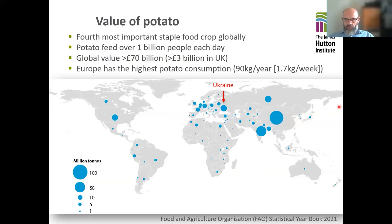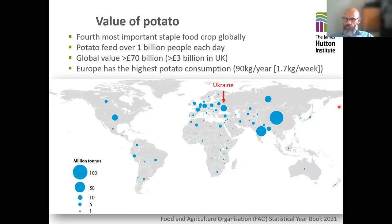This map shows us several things. First of all, it shows us that potato can be grown around many parts of the world. This is important because it can grow in different climatic zones, which is essential for food security, and a lot of other major crops can't do that. What might surprise people is that China and India are the two biggest producers of potato — they produce about half of all potatoes worldwide. Then Europe, all the countries in Europe together, produce another quarter. And interestingly, Ukraine is the third biggest potato producer in the world, followed by Russia and the US.